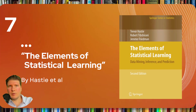Book number seven is another classic, Elements of Statistical Learning by Hastie et al. It covers a number of important supervised and unsupervised ML algorithms, including regression and classification, kernel methods, tree-based models, and more. Check it out.